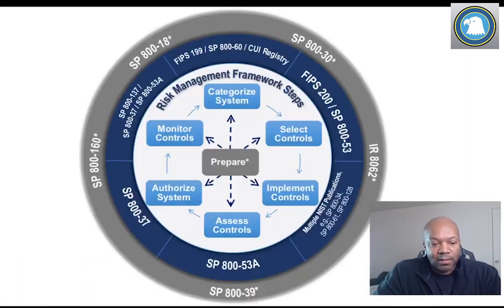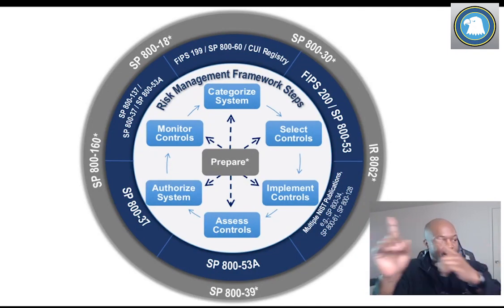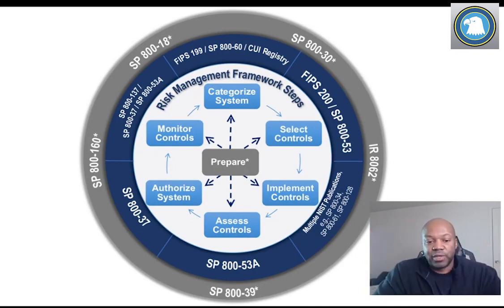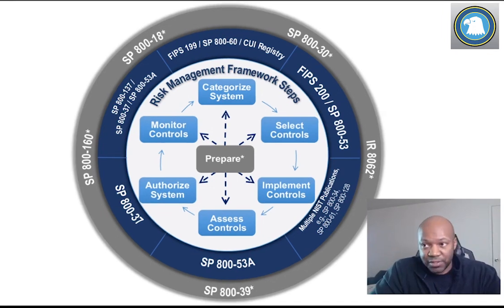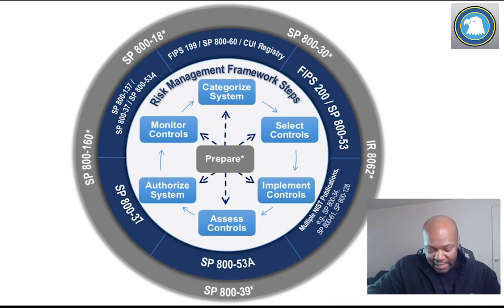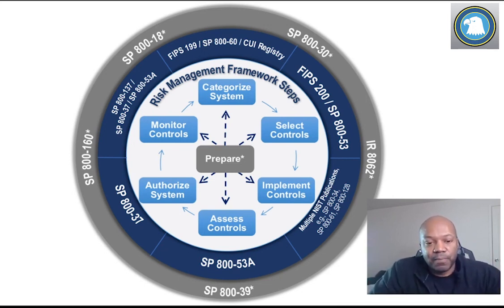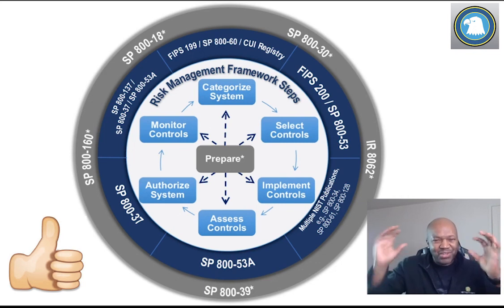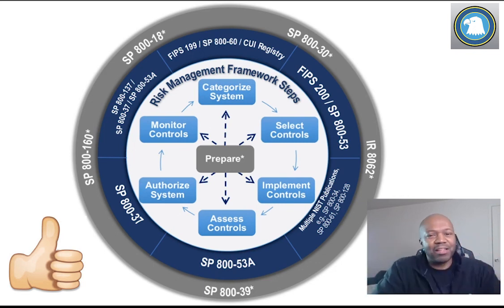What you're looking at here is the NIST 800-37 Risk Management Framework process. For this person asking — they're changing their operating system — what controls do they need to go through? The answer is all of them. I know you're like, what do you mean all of them? Let me explain.